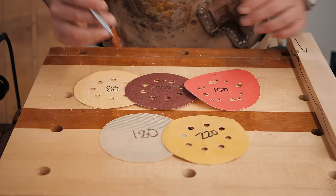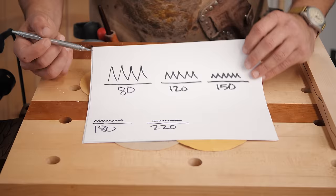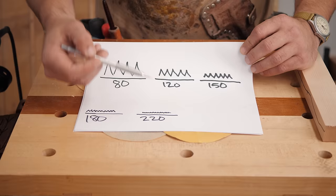There is a very specific reason why you work through the grits. Now, when you look at the grits, they basically look like this. This is 80, very deep, takes off a lot of material all the way up to 220, which is very small.